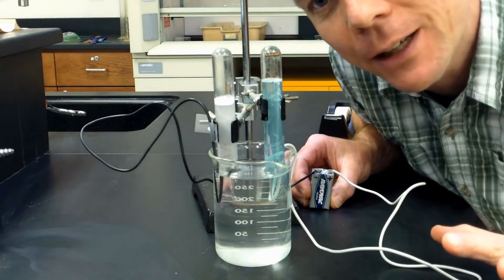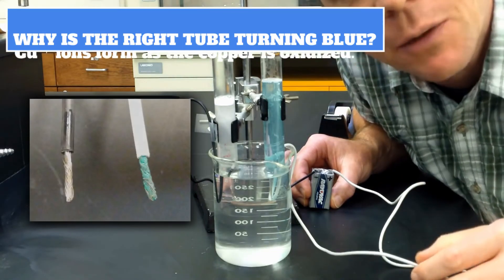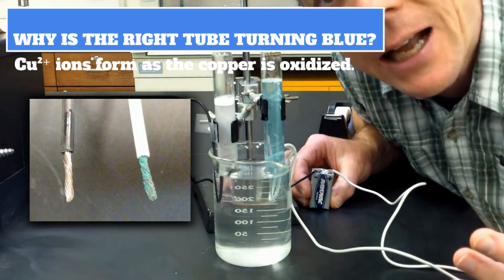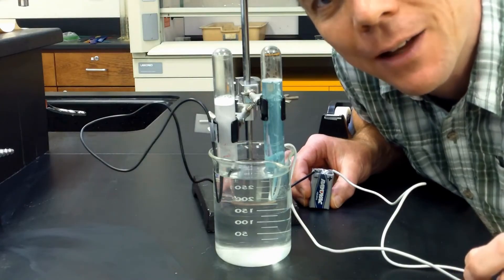Another interesting thing that's happening here in this experiment, we're also forming copper ions, and I think that's because of the wire that I used. We can see the blue tint that's being added to the water, and this is because of the formation of copper 2 plus ions.